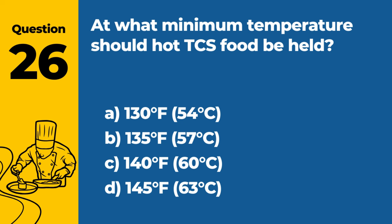Question 35: How long can ready-to-eat TCS food be stored in a refrigerator before it becomes unsafe? A. 24 hours. B. 3 days. C. 7 days. D. 14 days. Answer: C. 7 days. Ready-to-eat time/temperature control for safety (TCS) food can be safely stored in a refrigerator for up to 7 days.